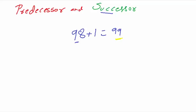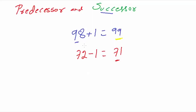Now let us see what predecessor means. Take the number 72 as an example. When you subtract 1 from it, the number you get is 71, and this is called the predecessor. So, predecessor means when you subtract 1 from a given whole number or natural number, the number you get is the predecessor. Successor means when you add 1 to a number, the result is the successor.